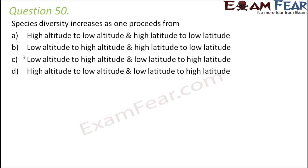Question number 50: Species diversity increases as one proceeds from which direction? The options are: high altitude to low altitude and high latitude to low latitude; low latitude to high altitude and high latitude to low latitude; low altitude to high altitude and low latitude to high latitude; high altitude to low altitude and low latitude to high latitude.